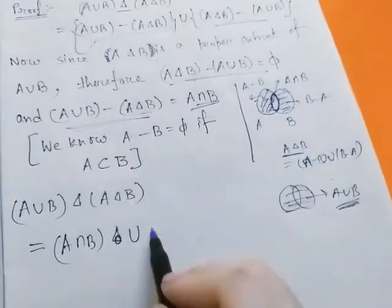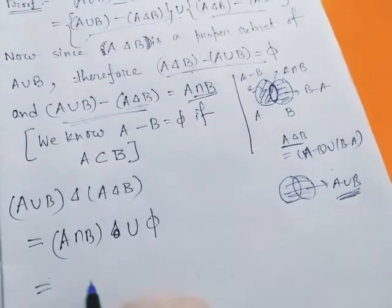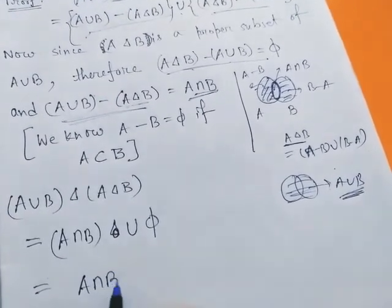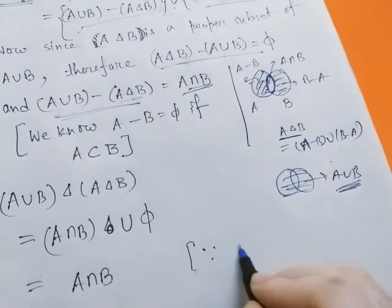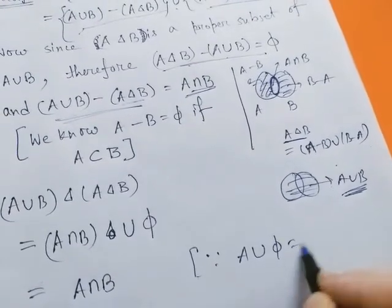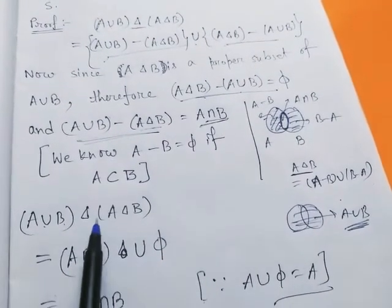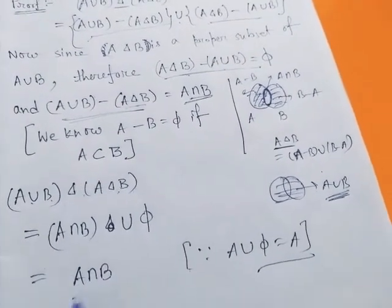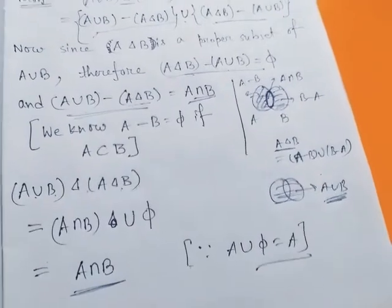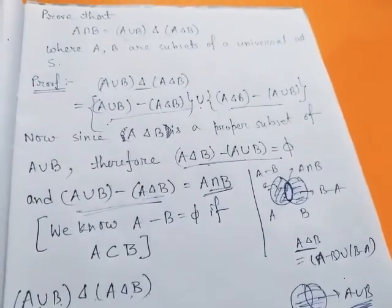This is phi. So obviously this will be A intersection B, since A union phi equals A for every set A. So we proved A union B delta A delta B equals A intersection B. If you like this video, please share, subscribe, and comment.